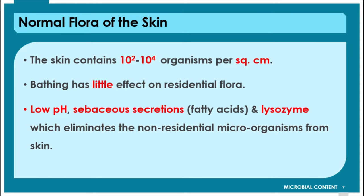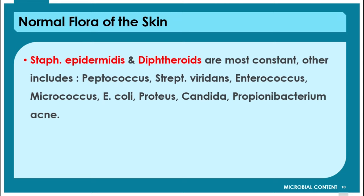As far as the skin is concerned, the most important species normally present include Staphylococcus epidermidis and diphtheroids, which are the most constantly present on the skin. Other organisms include Peptococcus, Staphylococcus viridans, Enterococcus, Micrococcus, sometimes E. coli, Proteus, Candida, and Propionibacterium acnes. You must remember that Staphylococcus epidermidis and diphtheroids are the most constantly present on the skin.